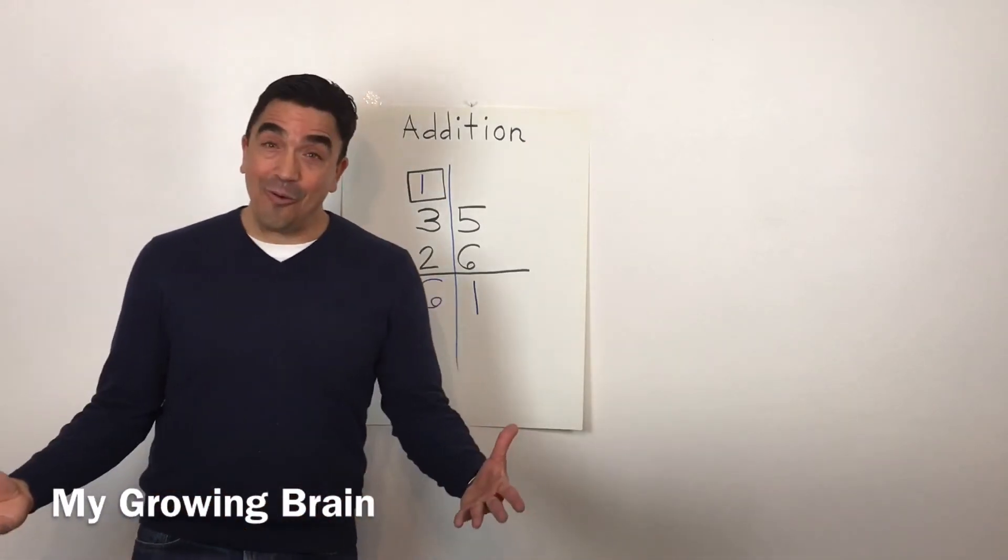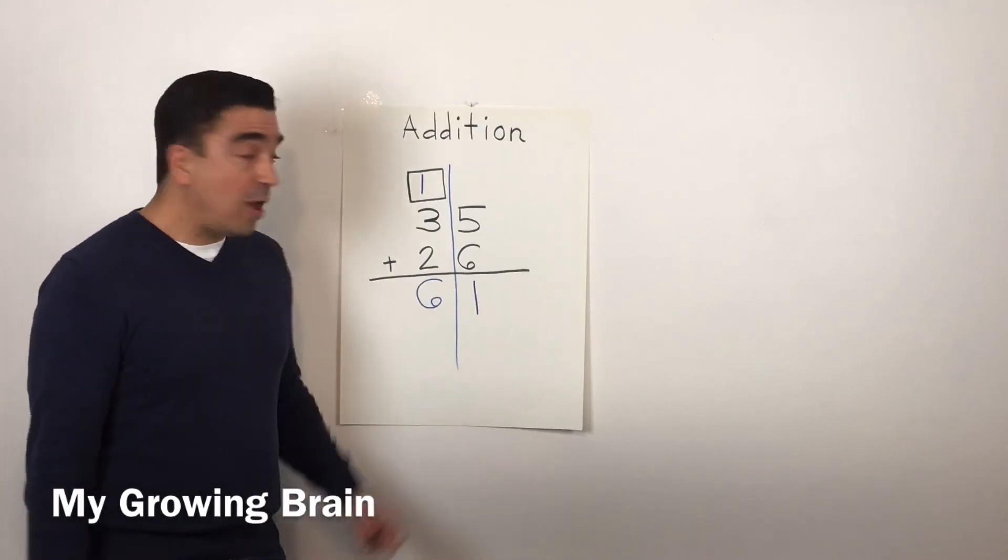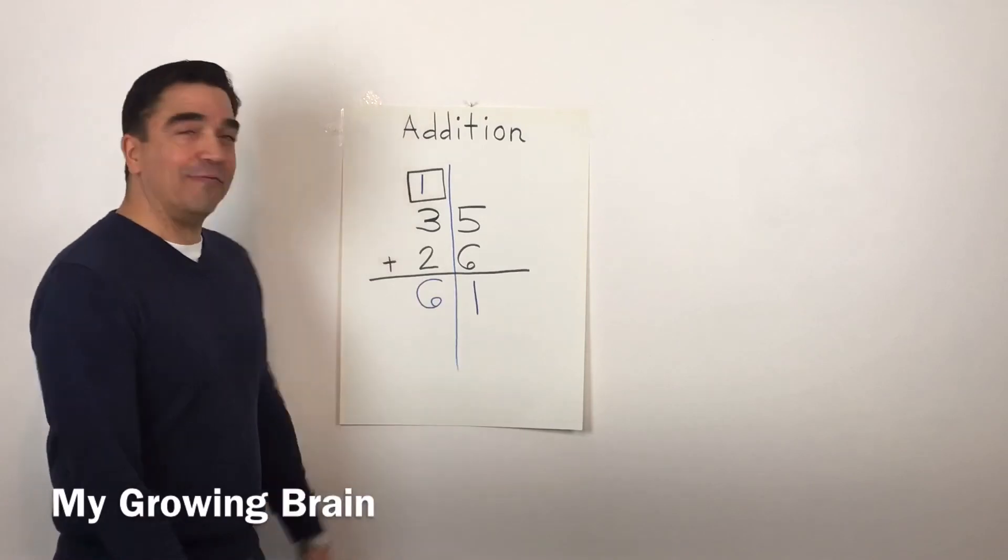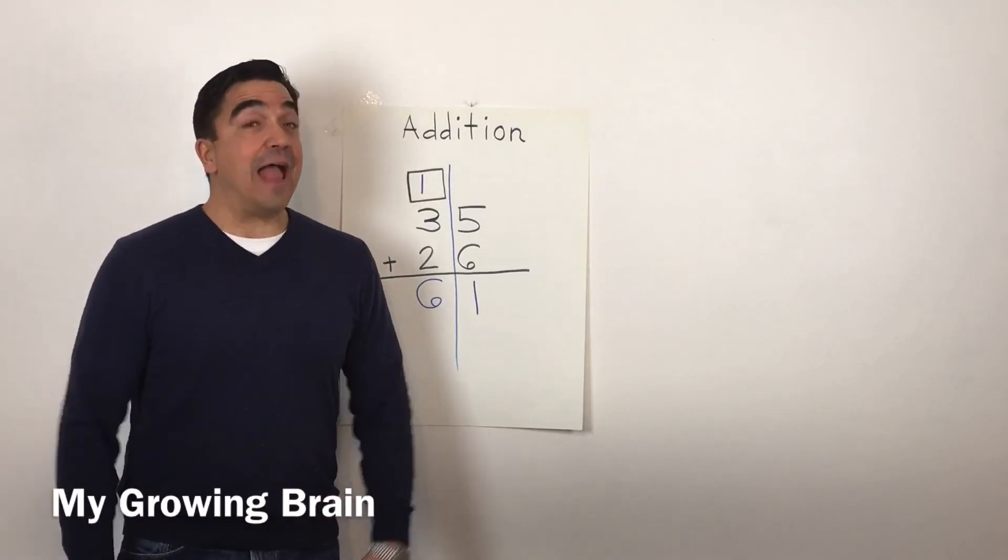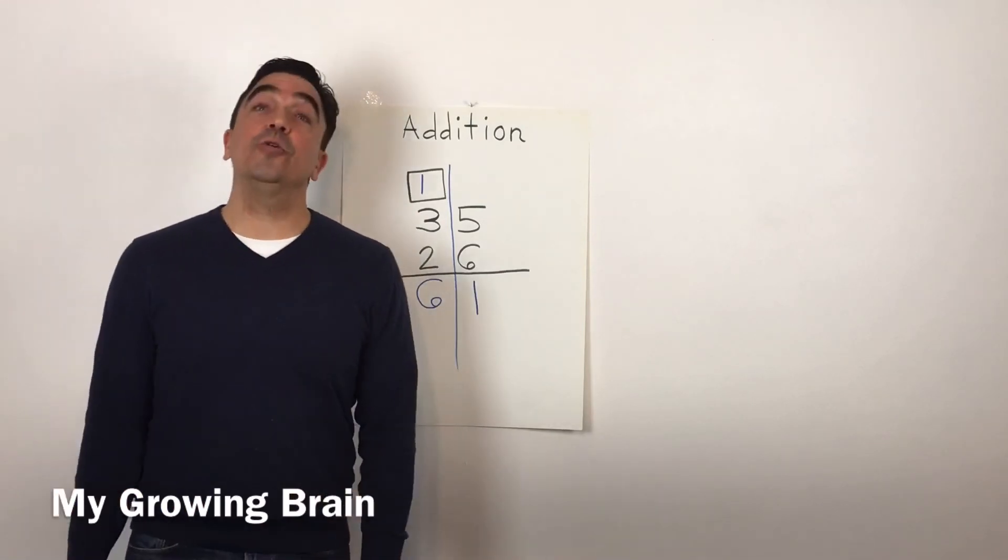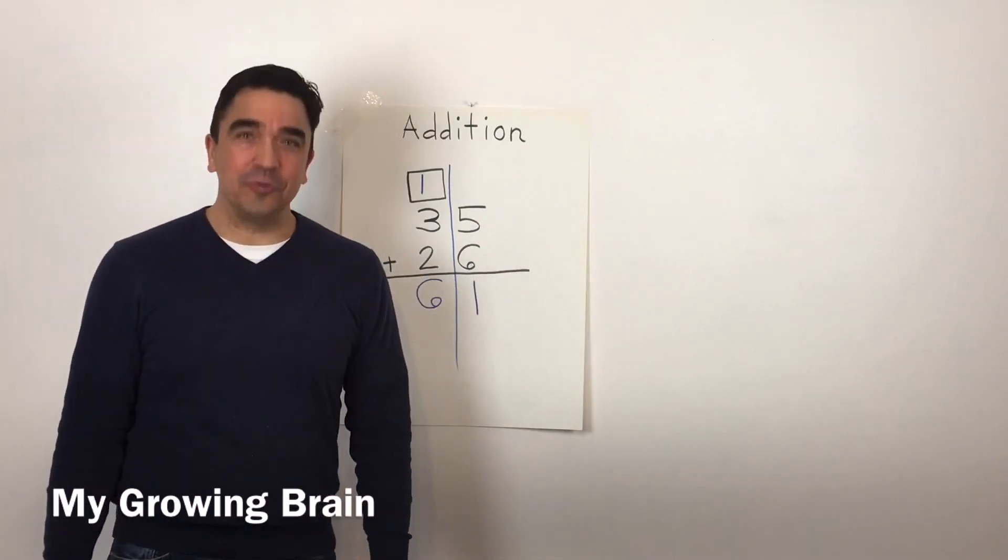So, 35 plus 26 gives us a sum of 61. And don't forget, the sum is the answer to an addition problem. And that concludes our lesson.